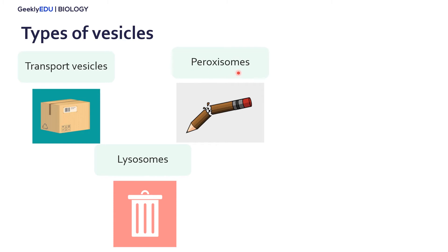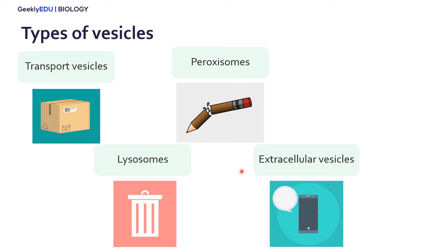Peroxisomes, also like lysosomes, contain digestive enzymes, and they're really important for helping us break down molecules such as fatty acids and alcohol. Then we have extracellular vesicles — extracellular just means outside of a cell — and they're really important for cell communication and signaling to one another.